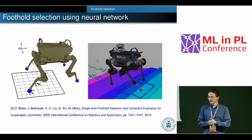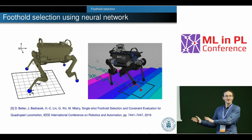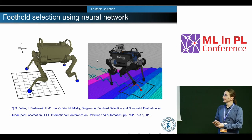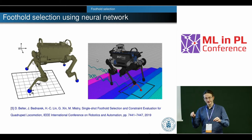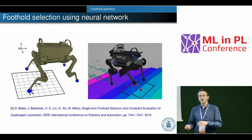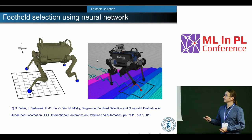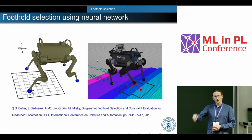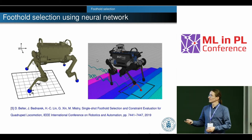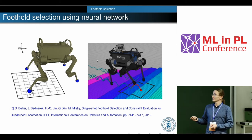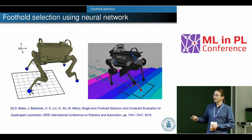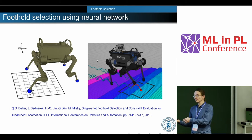The last example is about foothold selection — a completely different robot with four legs designed to work on rough terrain, especially in mines. When this robot walks on rough terrain, it must carefully detect footholds to avoid edges and falling down. The standard controller provides a reference position for the foot in a given direction. We take the elevation map around that nominal position and try to find the best foothold. Traditional methods solve this sequentially, which is slow.